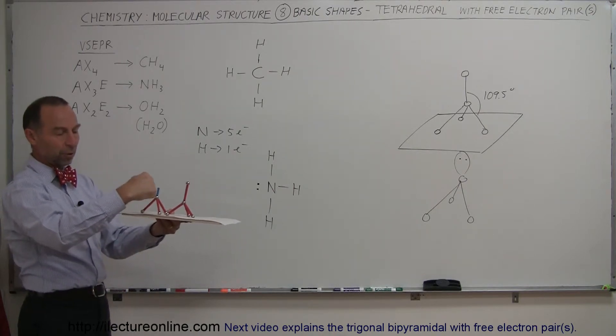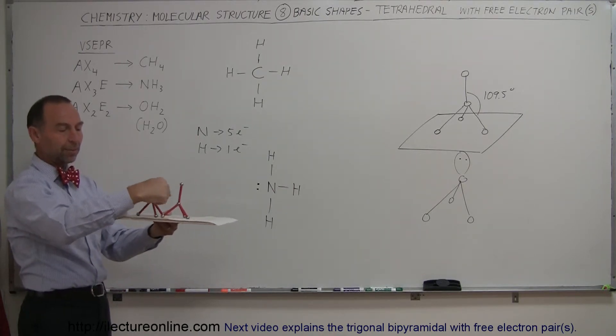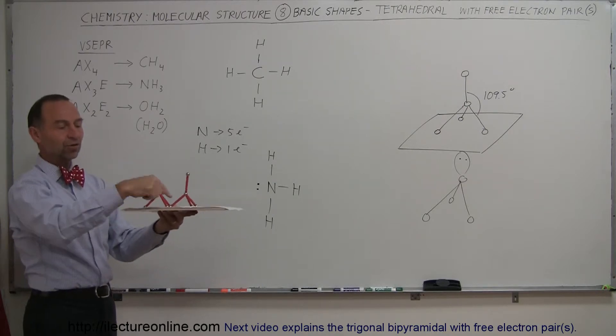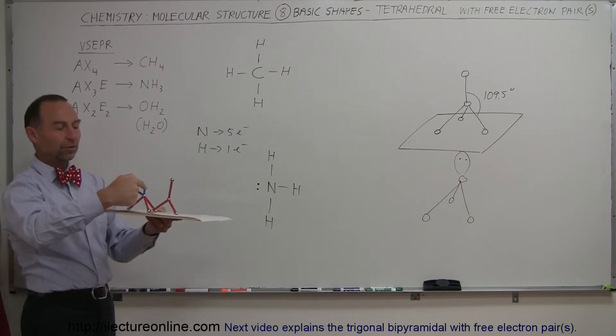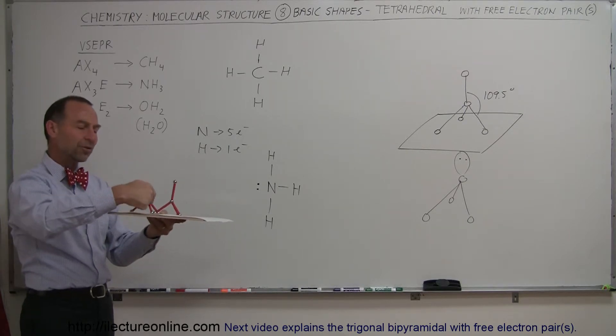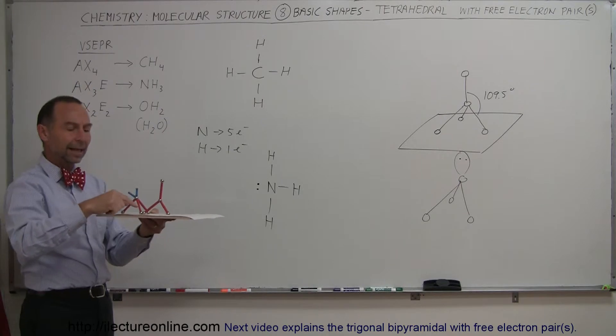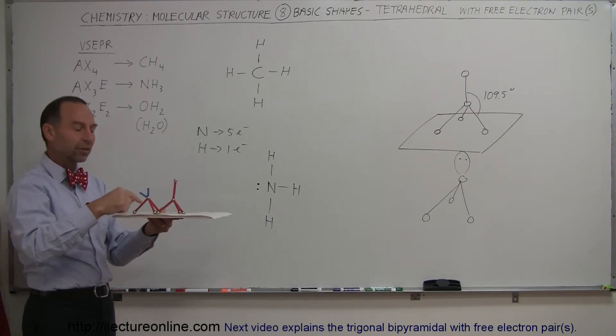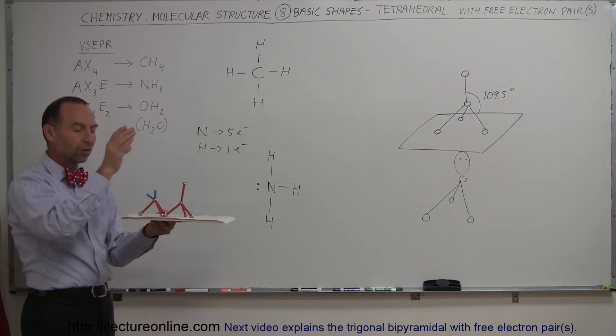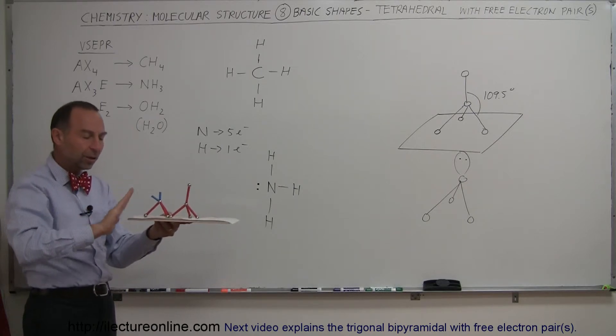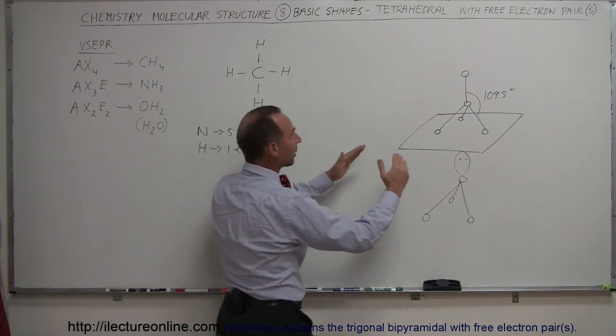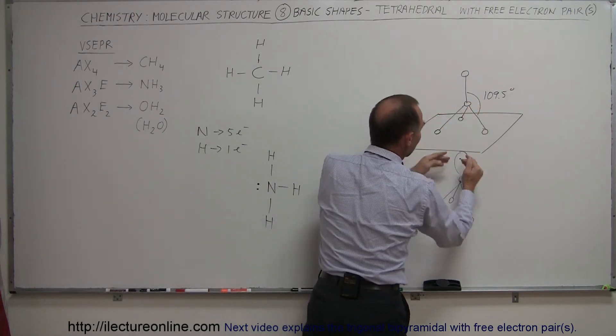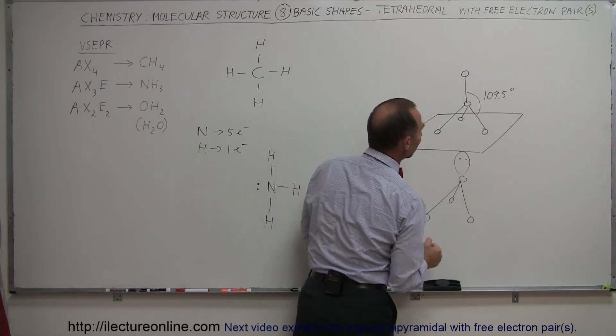But that free electron pair also repulses the electrons that make up the bonds. So we have a very similar shape that we had before, with one slight difference. The repulsive forces between the free electrons and the electrons taken up in the bonds is greater than the repulsive forces between these electrons, all that are within the bonds. So it pushes those electrons a little bit further away, which means that the bond angles here will decrease between here and increase between there.